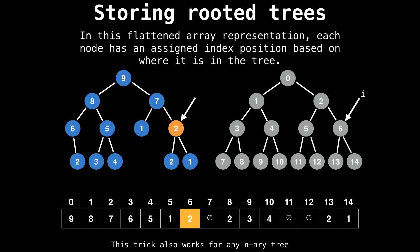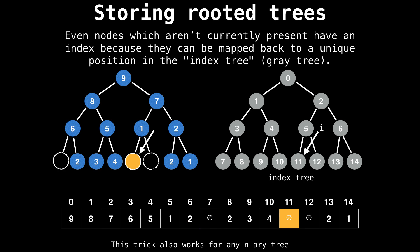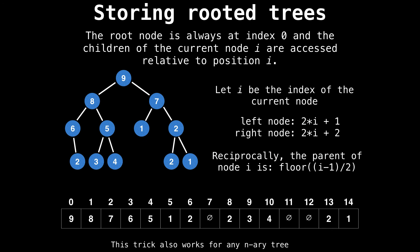Similarly, this node with a value of two has an index of six. Even nodes which aren't currently present have an index because they can be mapped to a unique position in the index tree, as I call it. In this format, the root node is always at index zero in the array, so you always know where your starting point is.